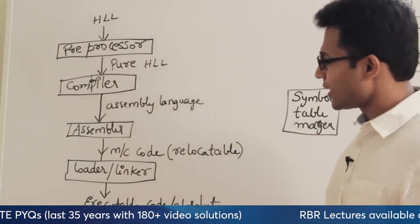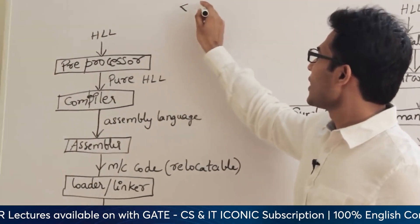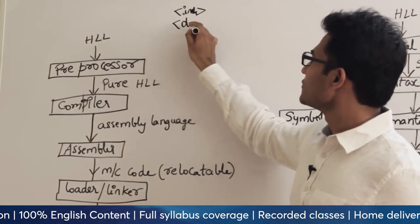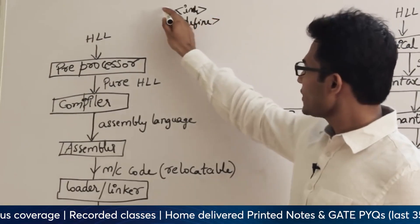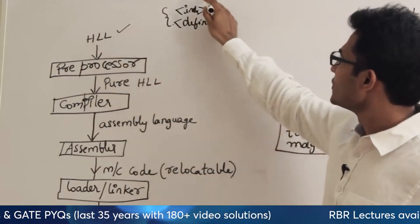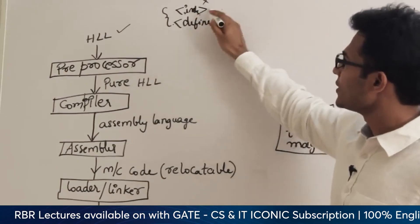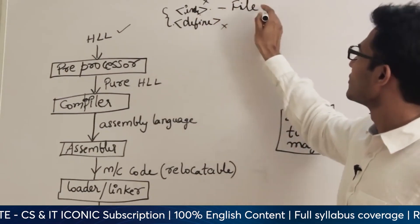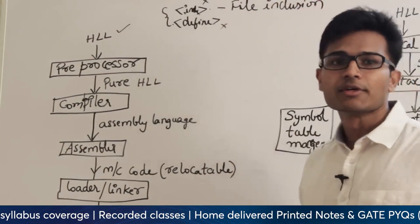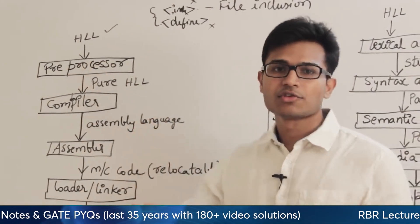What is a high-level language versus pure high-level language? If you write a C program, the starting lines are going to contain hash include or hash define. If a program contains such lines, it is called high-level language. The preprocessor is going to remove these lines — removing hash include by including the file. That is also called file inclusion. File inclusion means whatever file you want to include, the preprocessor substitutes that entire file into your source program.